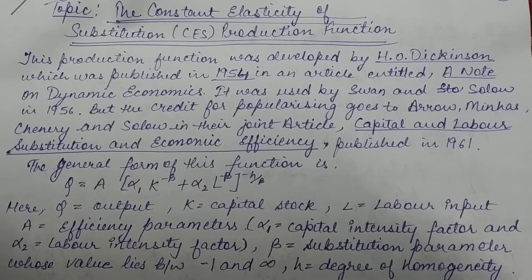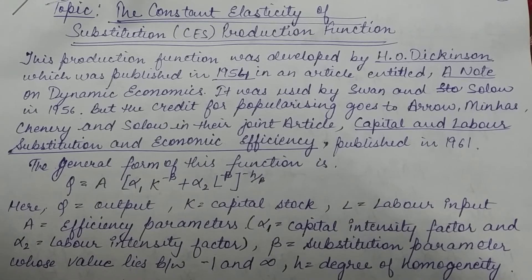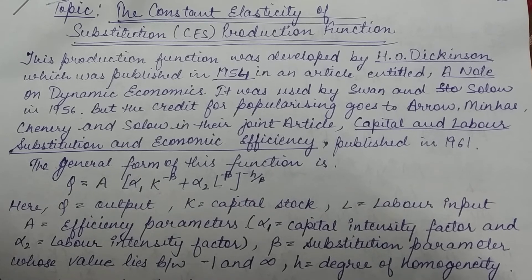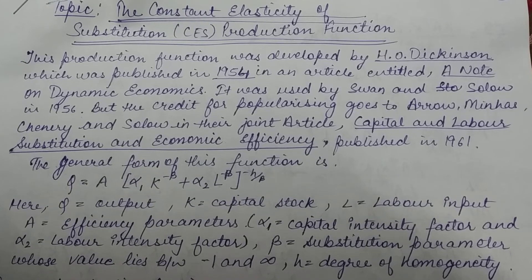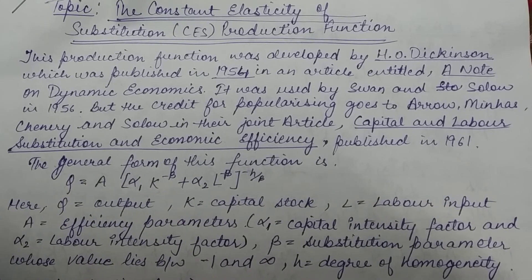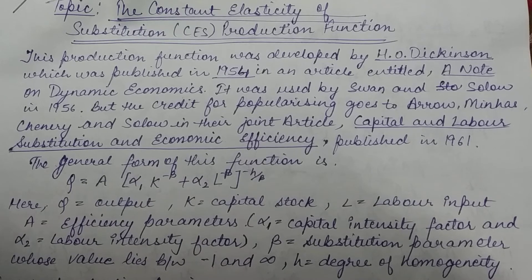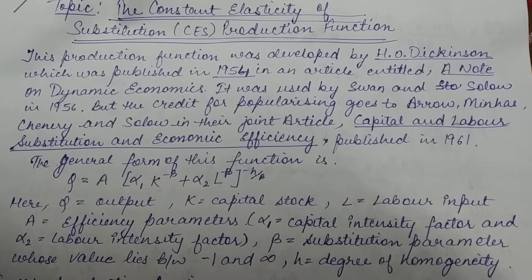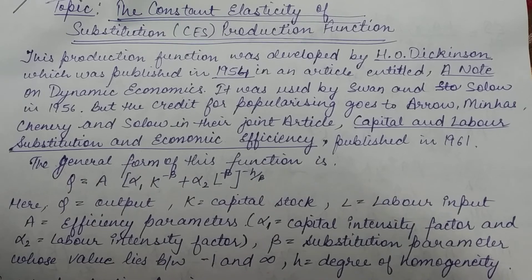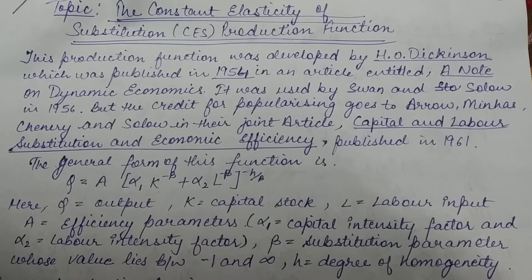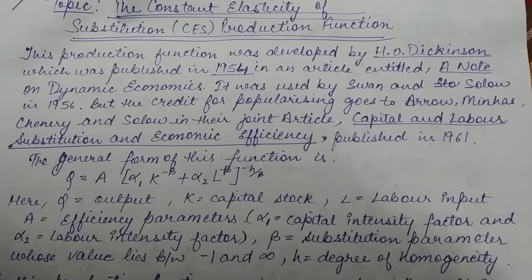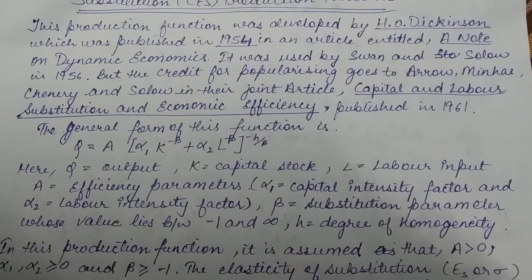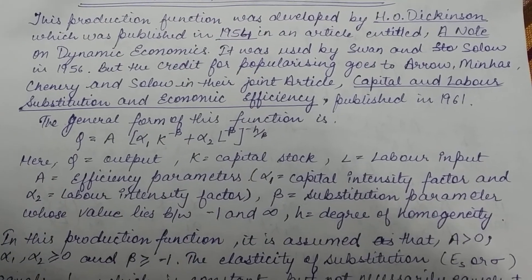Here Q represents output, K is capital stock, L is labour input, A is the efficiency parameter, alpha-1 is the capital intensity factor, and alpha-2 is the labour intensity factor. Beta is the substitution parameter whose value lies between minus 1 and infinity. H represents the degree of homogeneity.